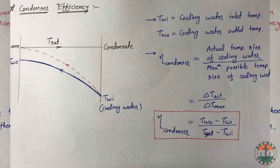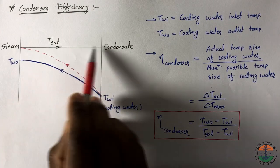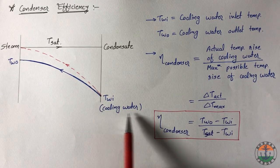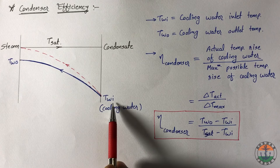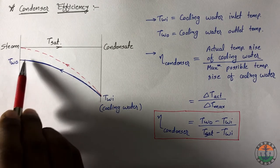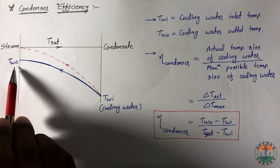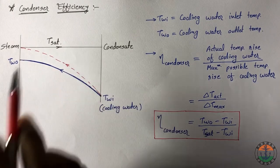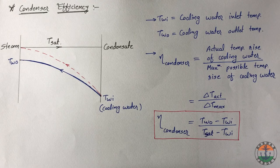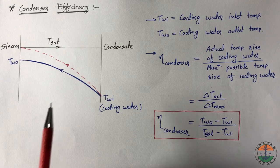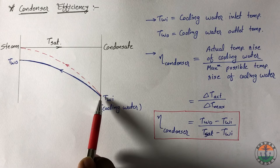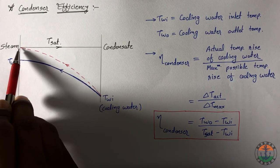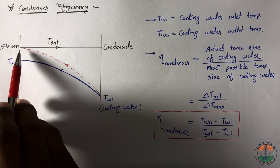In the condenser, steam is condensed at saturation temperature with the help of cooling water. Consider inlet temperature of cooling water as Twi and outlet temperature of cooling water as Two. Tsat is the saturation temperature. Here if you consider ideal situation in which temperature of cooling water increases from Twi to T saturation, but this is not possible.